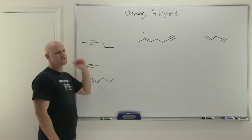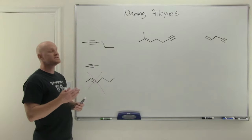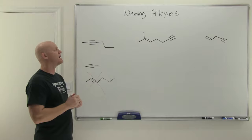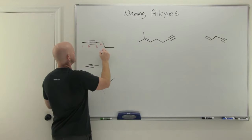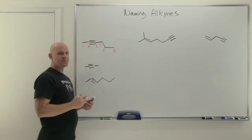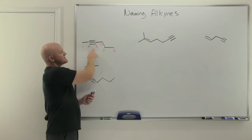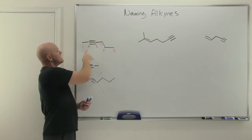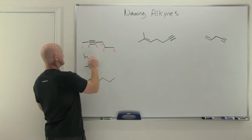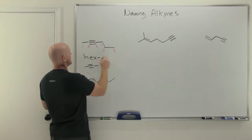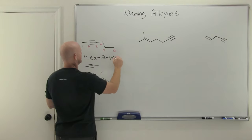Find the longest continuous carbon chain that the triple bond is part of and number it to give the alkyne the lowest possible number. In this case, numbering one through six left to right, the alkyne is between positions two and three. Just like with alkenes, you give it the designation of the lower of the two numbers. So this is hex-2-yne.